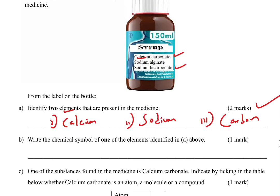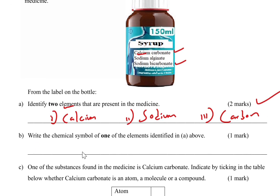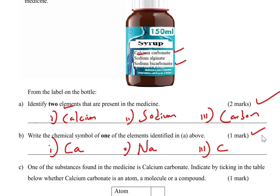Part B: write the chemical symbol of one of the elements identified in Part A. For calcium, the symbol is Ca — capital C, small a. For sodium, it is Na — capital N, small a. For carbon, it is C. Give the symbol for whichever element you named in Part A and you'll score one mark.